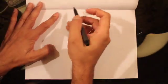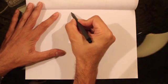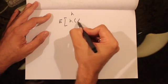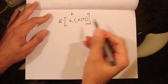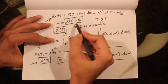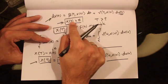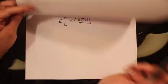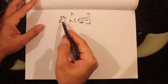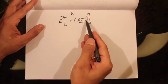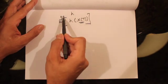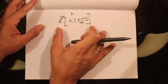Now, assume we are given a Borel measurable function h and we are required to find the expectation of h(x(T)), where x(T) is the solution of this SDE with initial condition x at time t. We write this as E^{t,x}[h(x(T))], where the superscript t,x indicates that x(T) is the solution of the SDE with the initial condition that at time t, x(t) equals x.